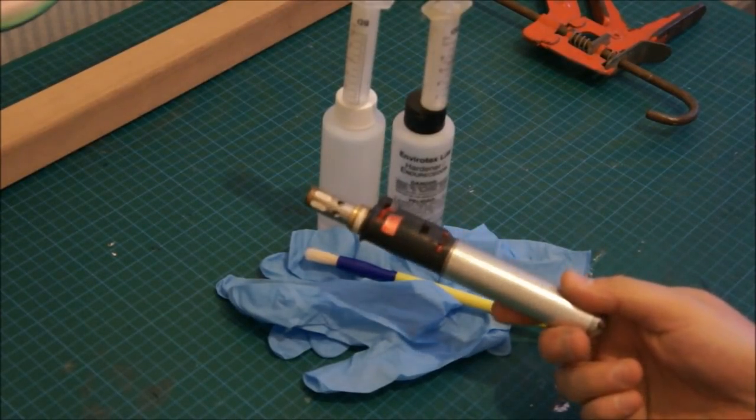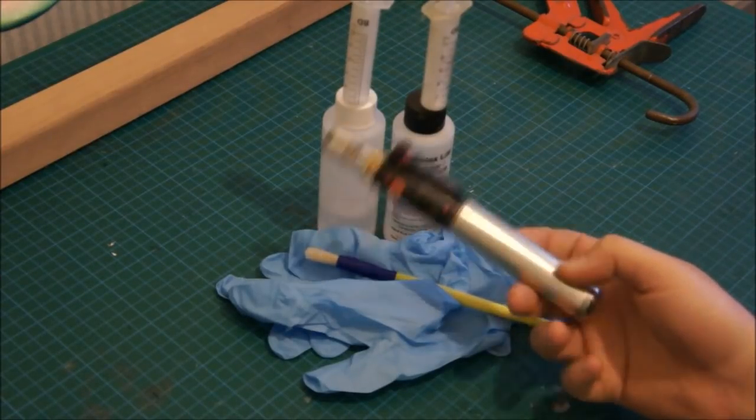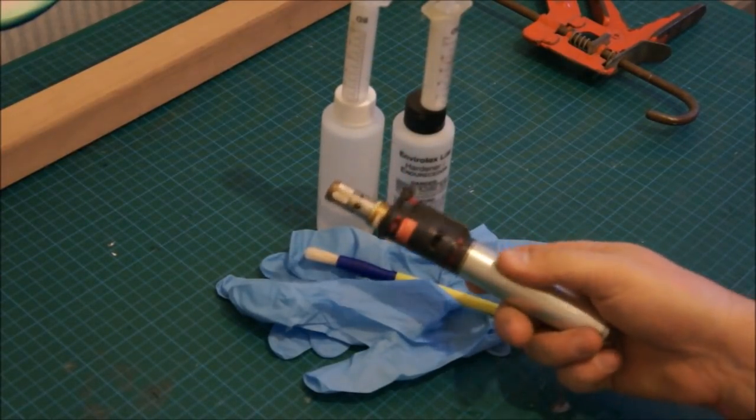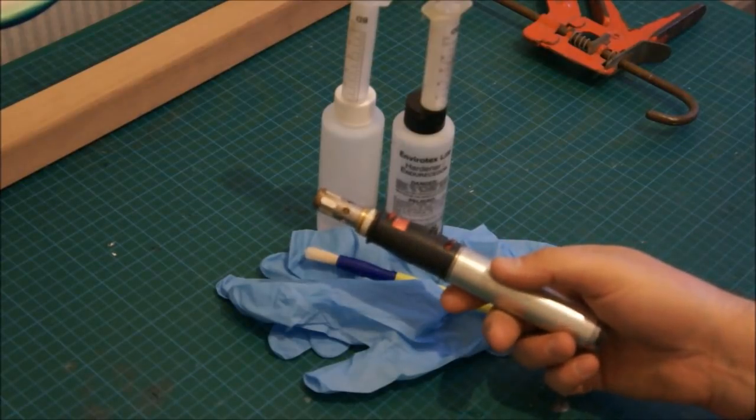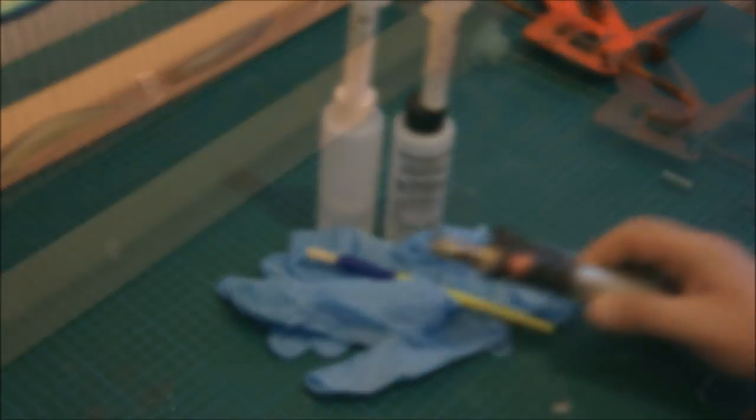A blow lamp - I'll show you what we're going to use that for later. This runs off cigarette lighter fluid, propane butane mix. This is going to be used for breaking the surface tension and removing bubbles later.